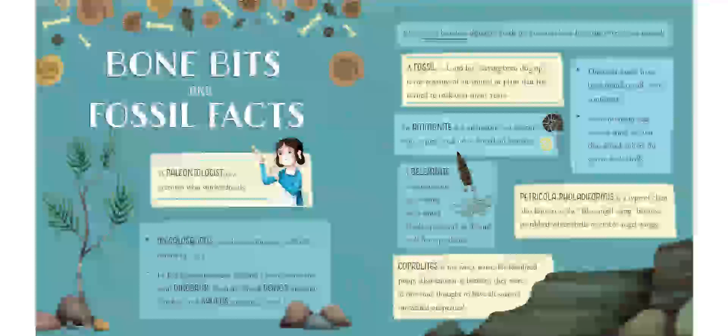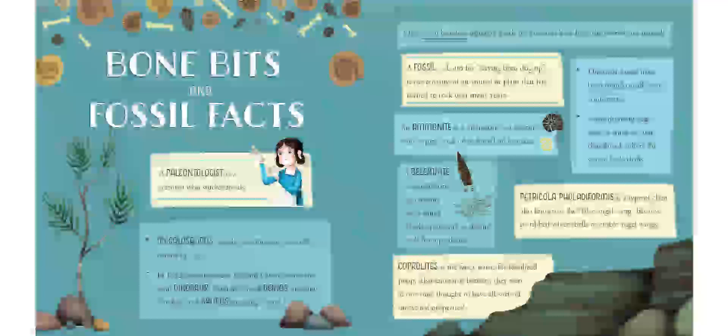A fossil, Latin for having been dug up, is the remains of an animal or plant that has turned to rock over many years. An ammonite is a prehistoric sea creature with a spiral shell often found on beaches. A belemnite is a prehistoric sea creature like a squid which squirts ink to defend itself from predators. Coprolites is the fancy name for fossilized poop, also known as bezoars. They were at one time thought to have all sorts of medicinal properties.